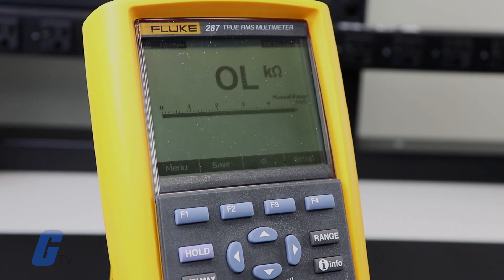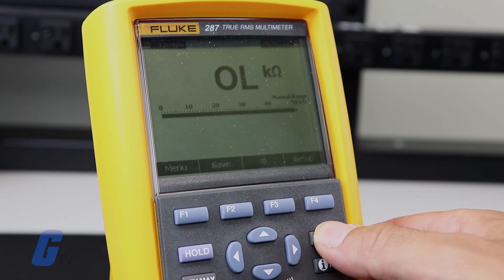If you set the range too low, your multimeter may display 1 or OL, indicating an open loop. You will need to increase your range to get a proper reading.